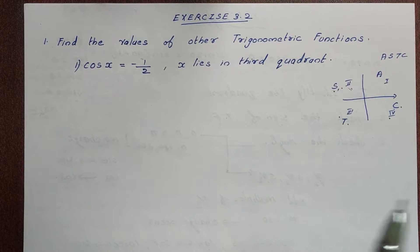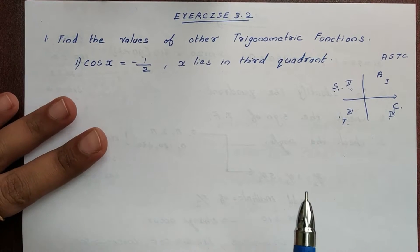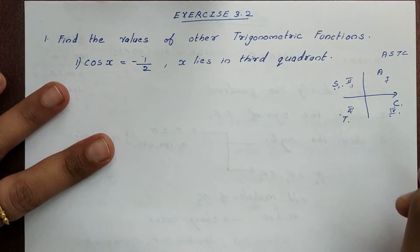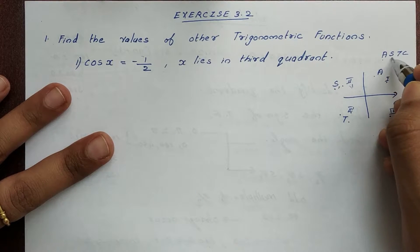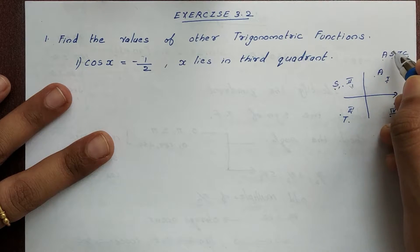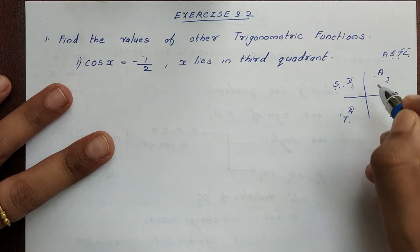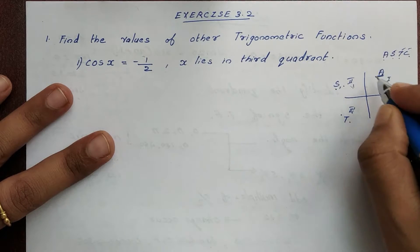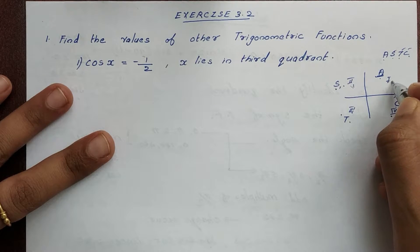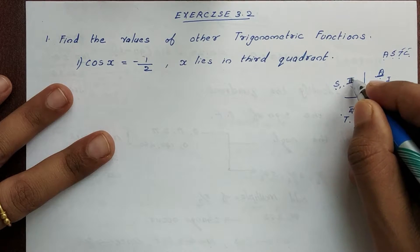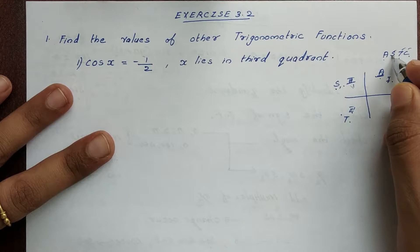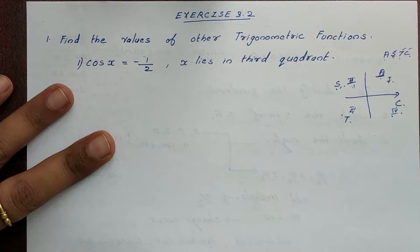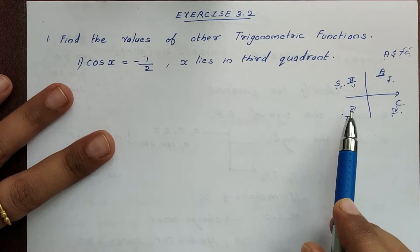In class, we have the signs of trigonometric functions. We have 4 quadrants: first, second, third, fourth. The rule is 'All Silver Tea Cups' — A, S, T, C. In the first quadrant, all trigonometric functions are positive. In the second quadrant, sin is positive. In the third quadrant, tan is positive.